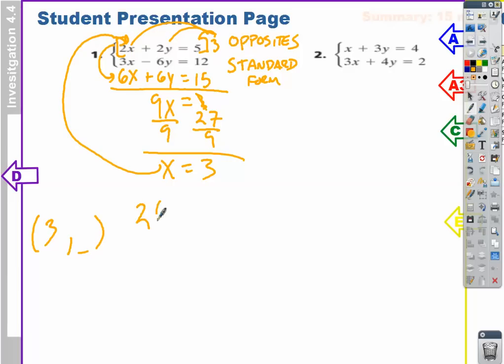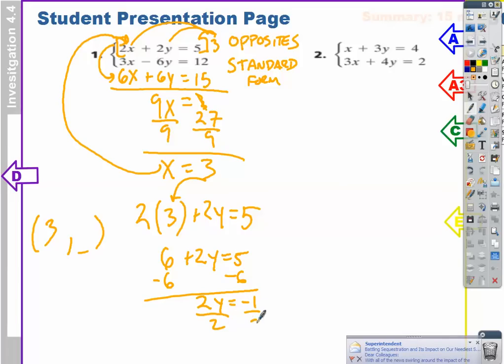So I have 2 times 3, because I'm just substituting that in, plus 2y equals 5. What's 2 times 3? 6. Plus 2y equals 5. The opposite of adding 6 is subtracting 6. So I get 2y equals negative 1. Divide by 2. I get y equals negative 1 half.